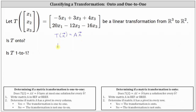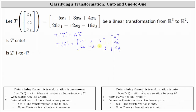We can write T of vector x as a two-by-three coefficient matrix times a three-by-one column matrix, since we have two equations with three unknowns. The column matrix has entries x1, x2, x3. The coefficient matrix has first row negative five, three, four — from the first equation — and second row twenty, negative twelve, negative sixteen — from the second equation.